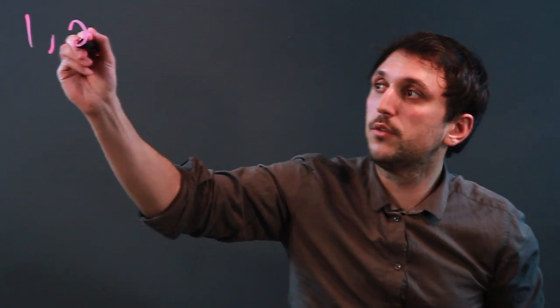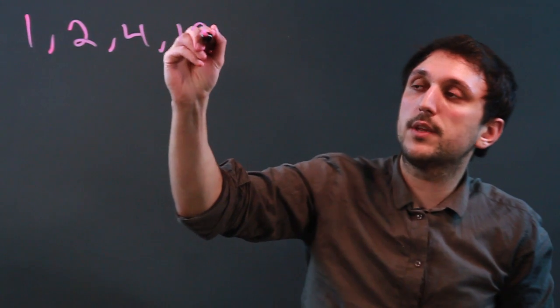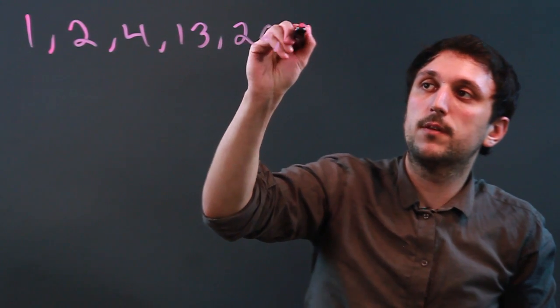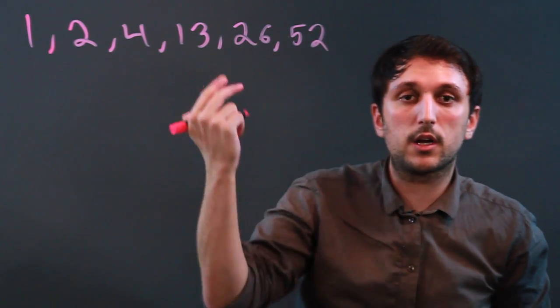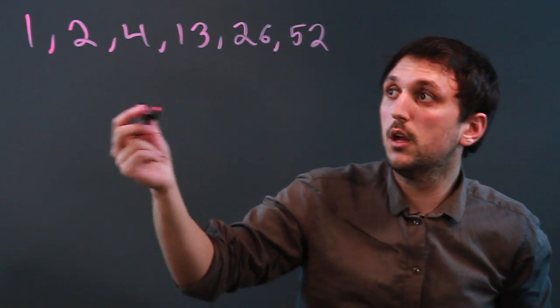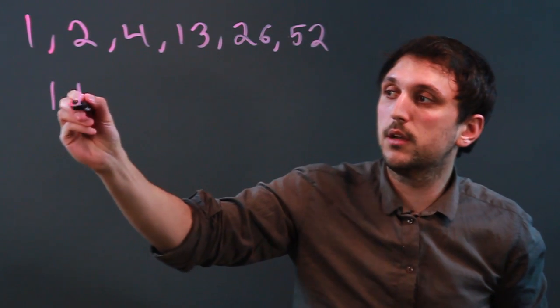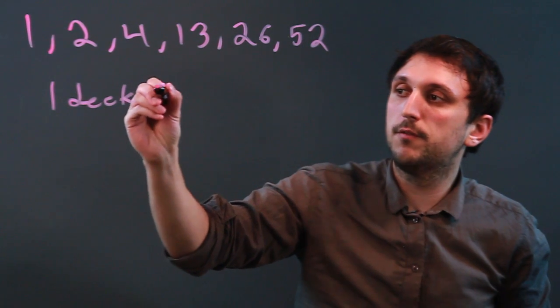So the factor string is 1, 2, 4, 13, 26, 52. And a good way to remember that is when you're thinking about a deck of cards, which has 52 cards in it, you have one deck, 52 cards.